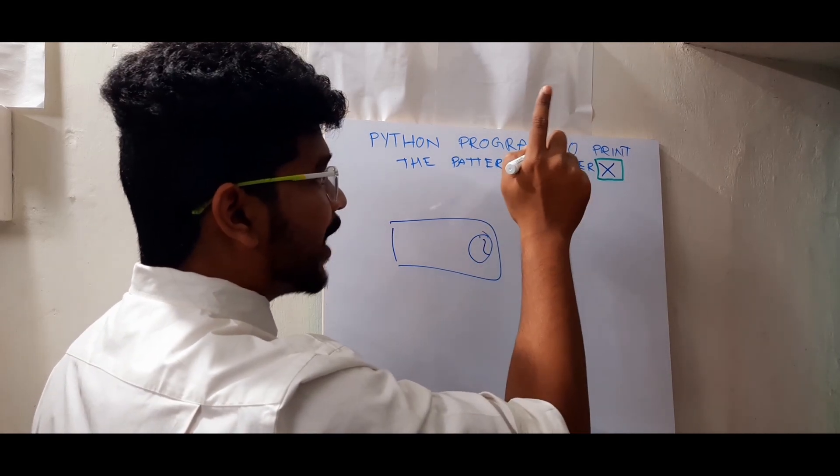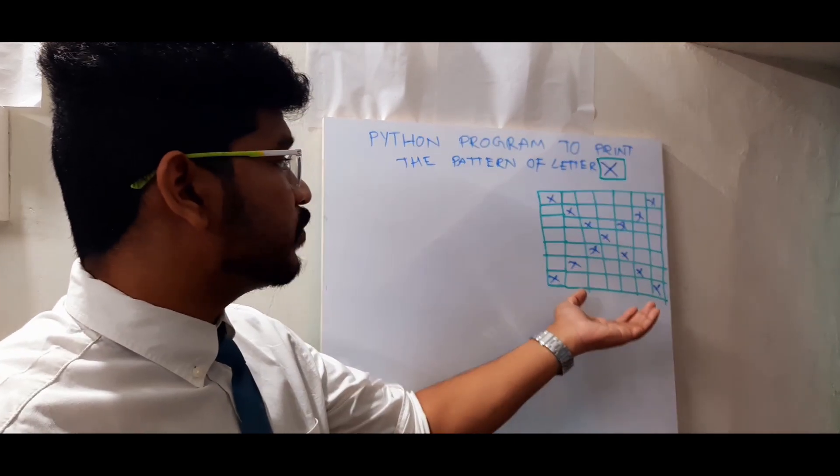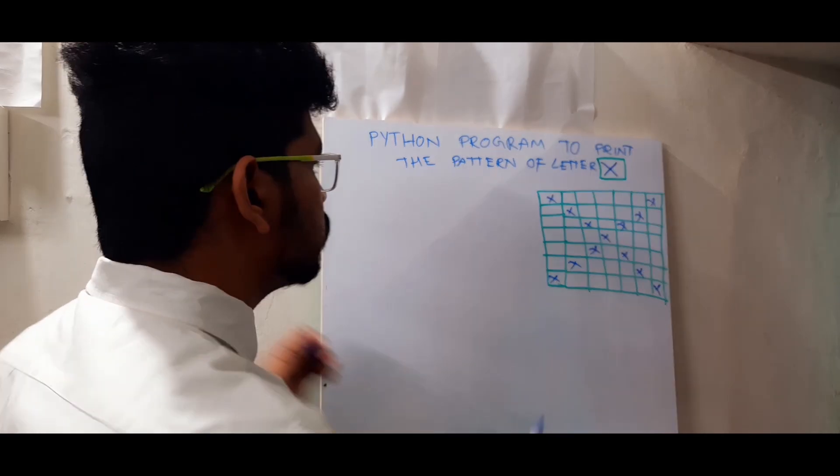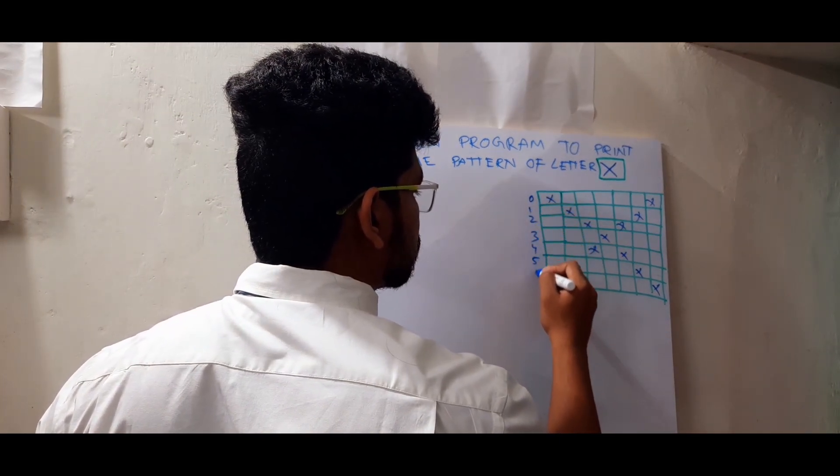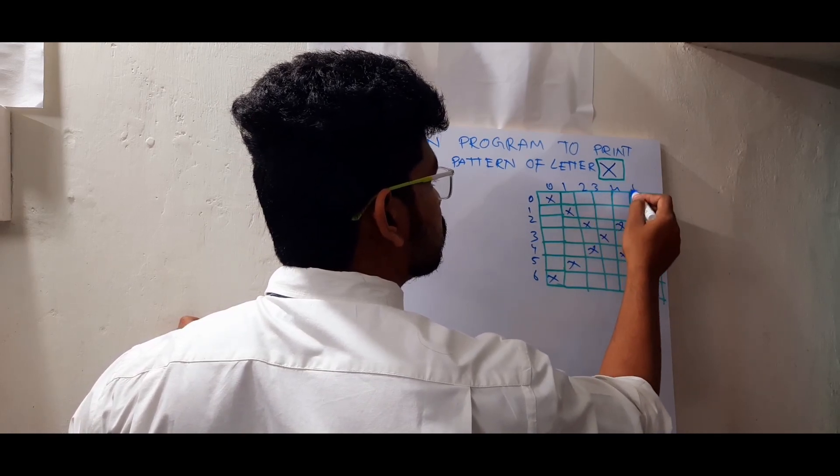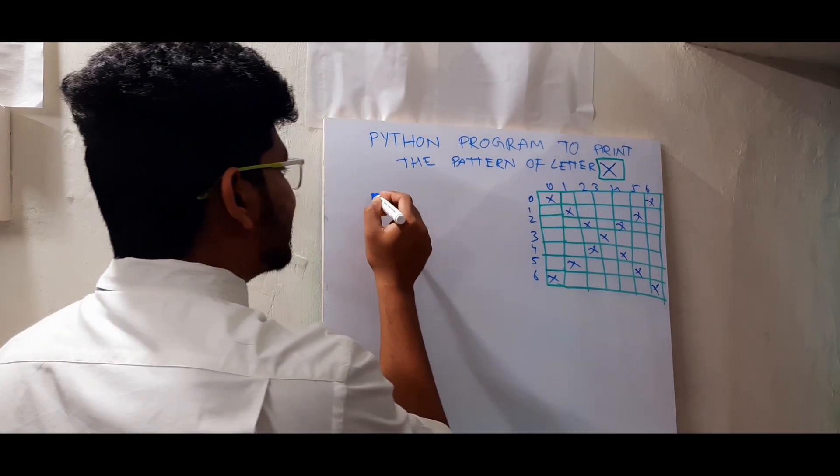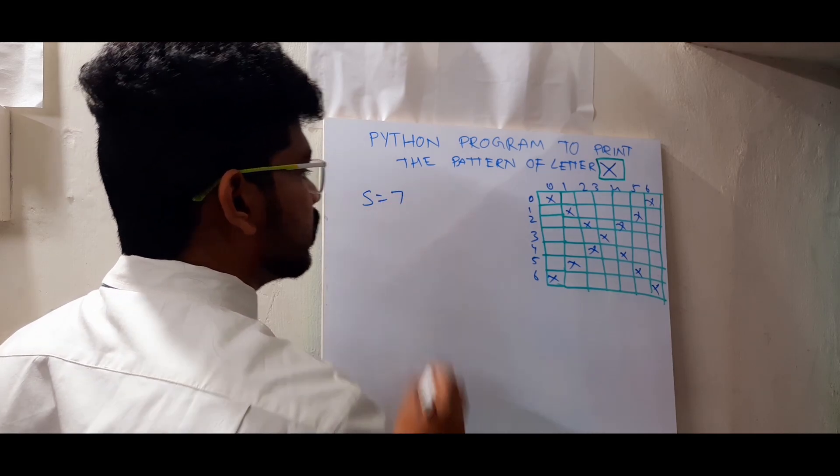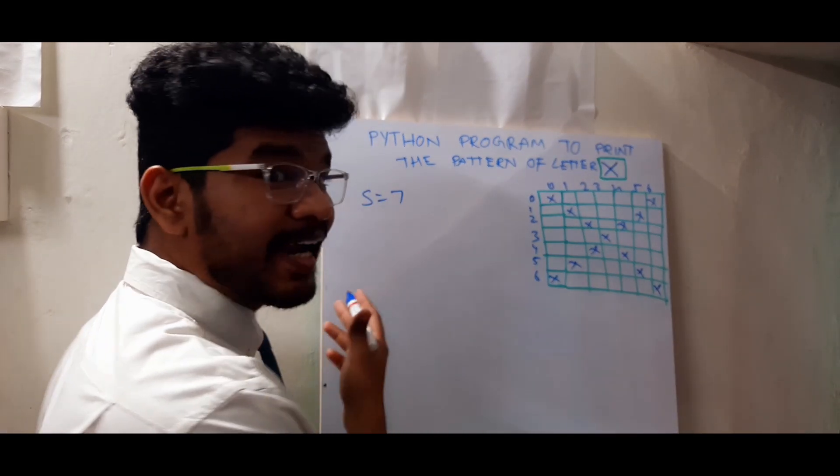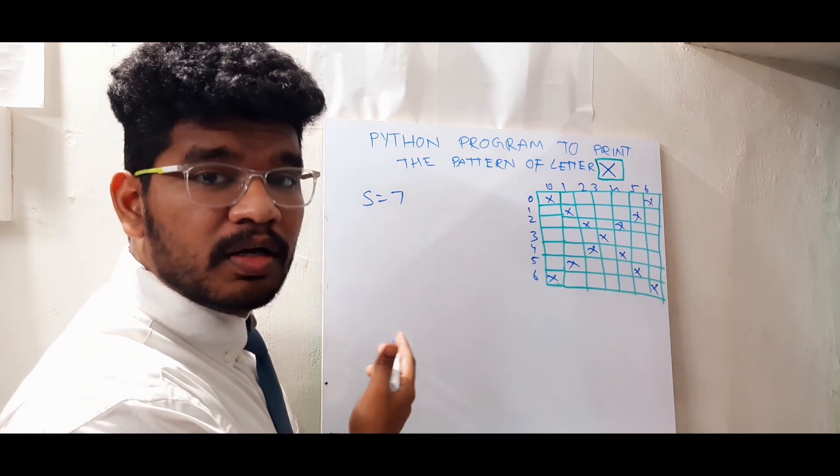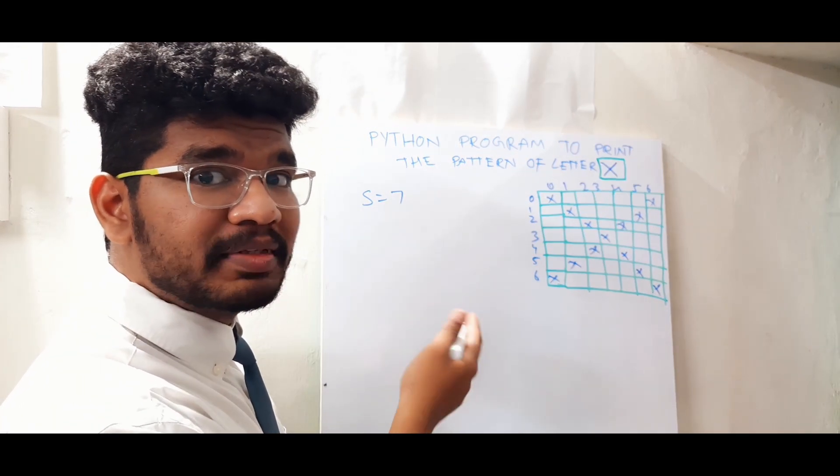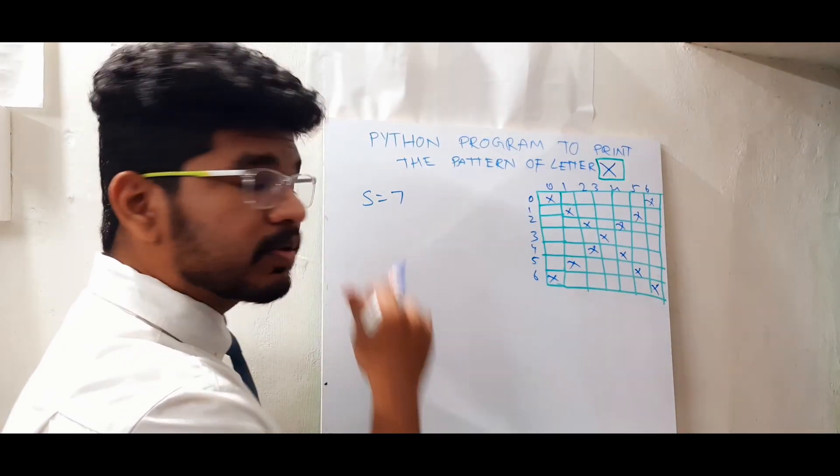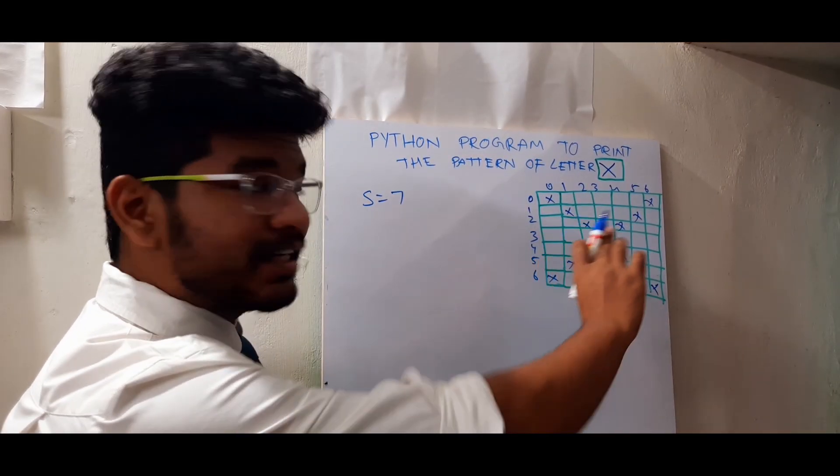So now let's get started with pattern of letter X. This is the pattern of letter X I am going to print now. Let's assume the size as 7. So here I am statically giving the size as 7. But when I go to my PyCharm IDE to code this program, I will take this number from the user. Based upon this number, the size of this letter may vary.